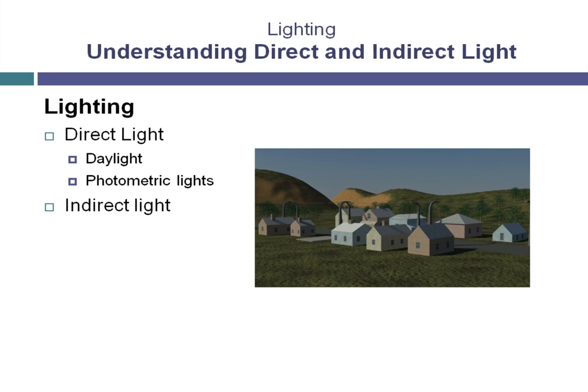We'll look at a process of generating this indirect light called final gather. This is a process within mental ray that calculates indirect light from a surface. Another technique of calculating indirect light is called global illumination. This is a different calculation than final gather, but they both accomplish a very similar function that results in the generation of indirect lighting.